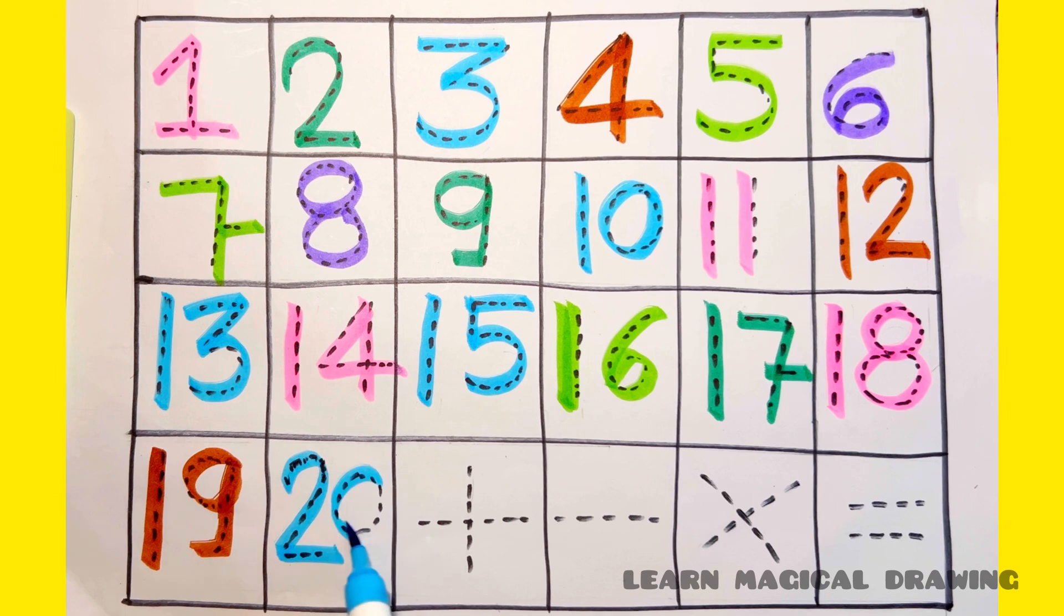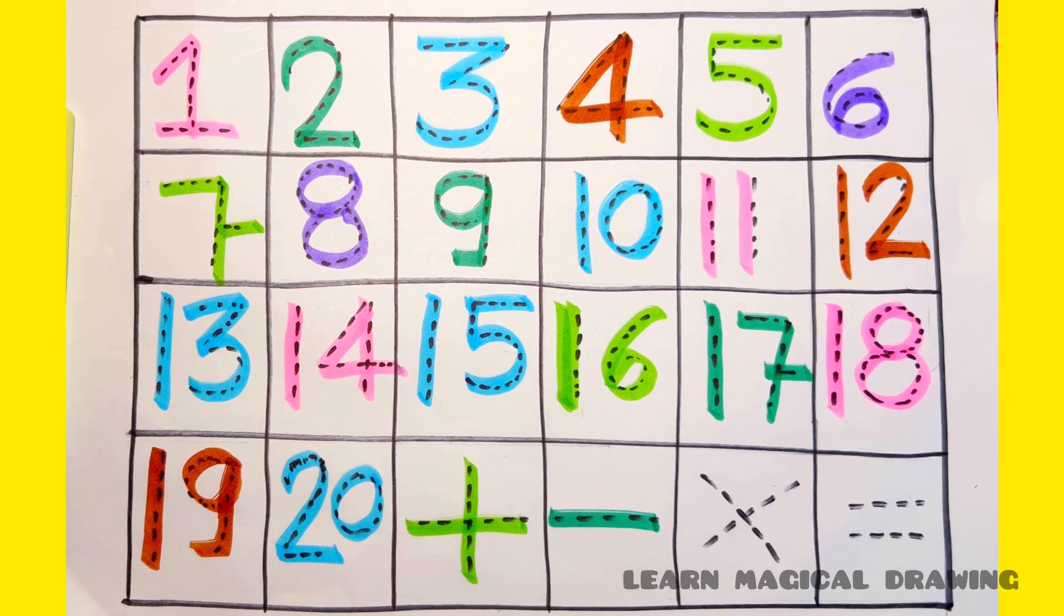Two, zero, twenty. Plus, minus, multiply, equal.